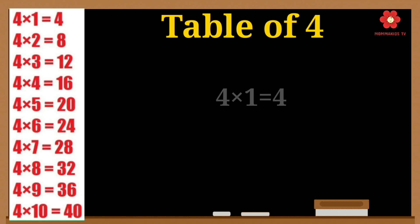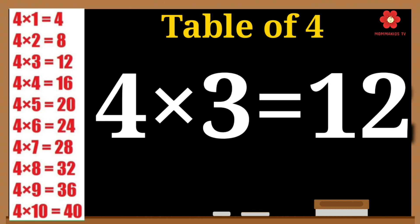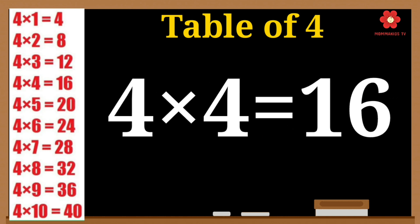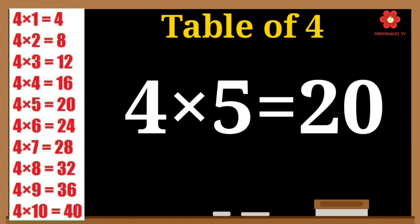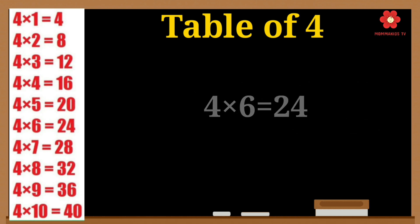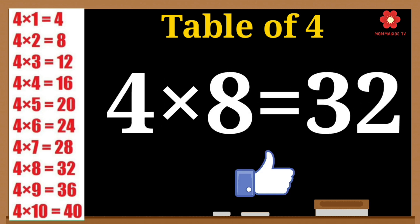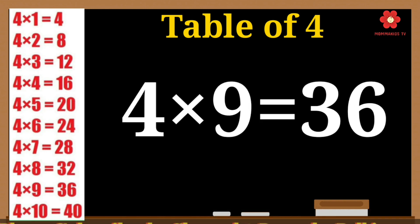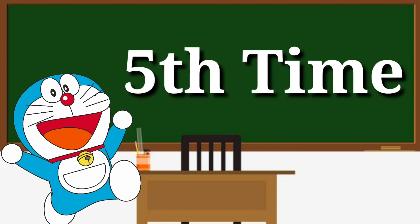4 ones are 4. 4 twos are 8. 4 threes are 12. 4 fours are 16. 4 fives are 20. 4 sixes are 24. 4 sevens are 28. 4 eights are 32. 4 nines are 36. 4 tens are 40.